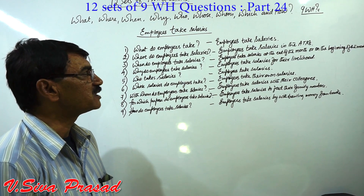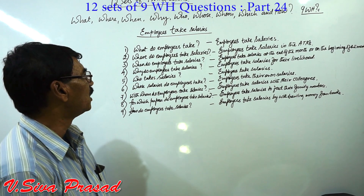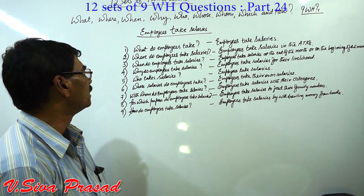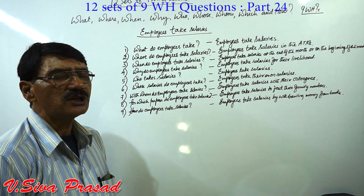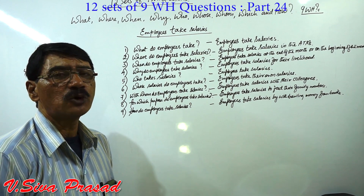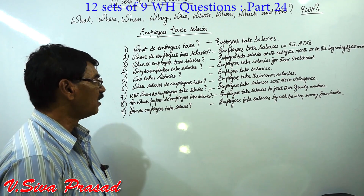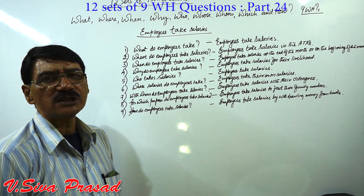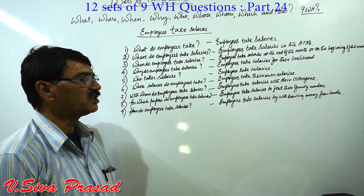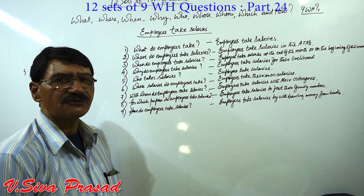Set 5 — Past Continuous: What were employees doing? Employees were taking salaries. Where were employees taking salaries? Employees were taking salaries in the ATMs. When were employees taking salaries? Employees were taking salaries at the end or at the beginning of the month. Why were employees taking salaries? Employees were taking salaries for their livelihood. Who were taking salaries? Employees were taking salaries. Whose salaries were employees taking? Employees were taking their own salaries. With whom were employees taking salaries? Employees were taking salaries with their colleagues. For which purpose were employees taking salaries? Employees were taking salaries to feed their family members. How were employees taking salaries? Employees were taking salaries by withdrawing money from banks.